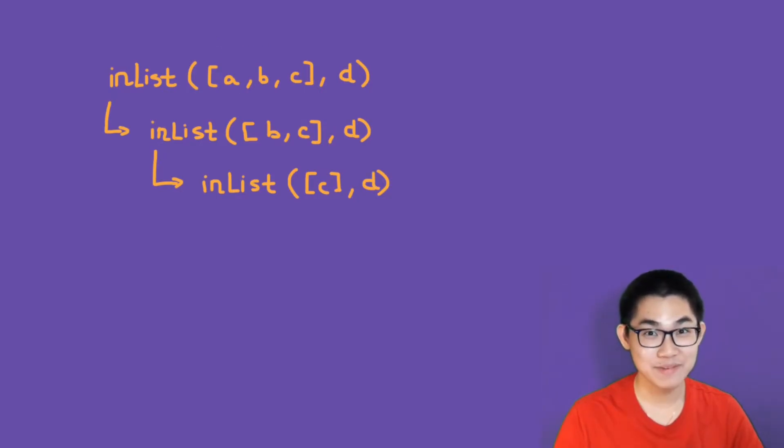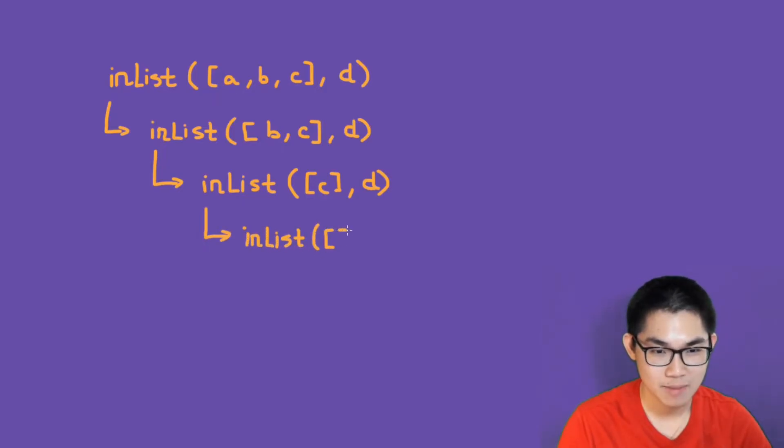So what happens if the element that we're searching for is not inside this list? So here we have d instead of c. And so once we get to this point, we're going to see that c is not d and we're going to recurse again. And this list will become empty. And now we still have d. So when we get to an empty list, we know that this element is not inside this list. So all we have to do is return false. So this will return false. And then going up the recursion tree, the final result will be false.